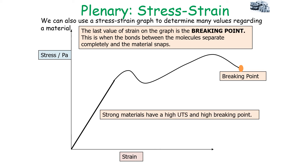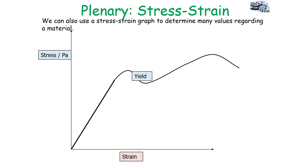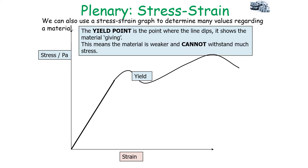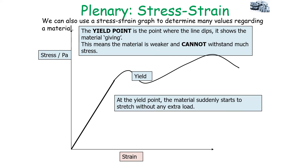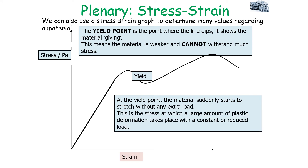Engineers must also consider the breaking point when designing a structure, ensuring stress won't reach it when conditions change. Strong materials should have both a high UTS and a high breaking point. The yield point is where the line dips, showing the material giving way — it becomes weaker and suddenly starts to stretch without any extra load being added. This is the stress at which a large amount of plastic deformation takes place with a constant or reduced load.